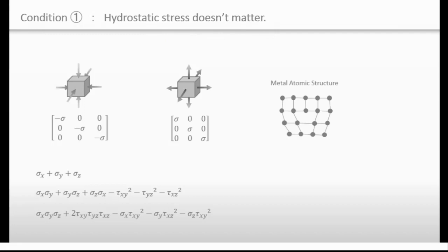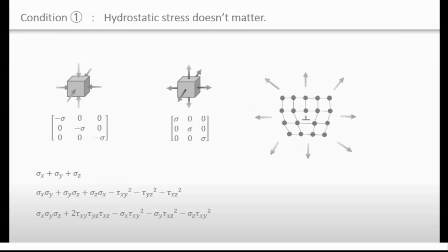But why? Consider the metal atomic structure — it normally has defects called dislocations, expressed with a specific symbol. If a dislocation moves, deformation occurs. When isotropic forces are applied to the material, the metallic bonds are very strong and the bonds won't break. Furthermore, isotropic forces don't push or pull the dislocation in any direction, so the dislocation cannot move, and therefore the material will not deform. That is why Mises added this condition.